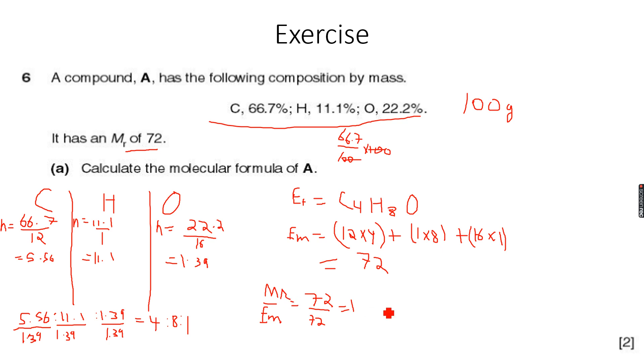So when the empirical mass is the same as the molecular mass, the empirical formula is the same as the molecular formula. In this case, the molecular formula is equal to C4H8O. This is the molecular formula as well as the empirical formula.